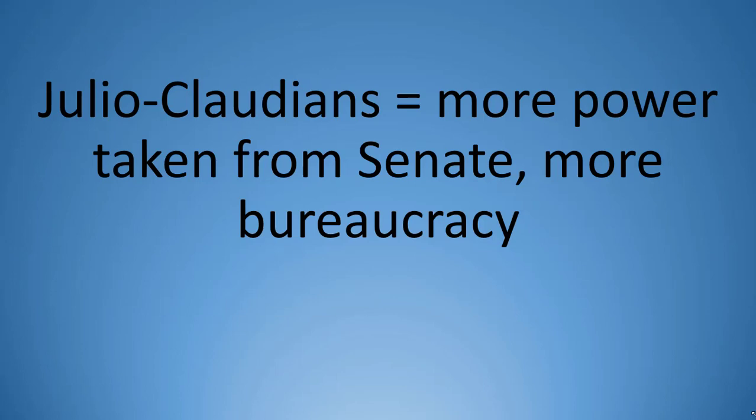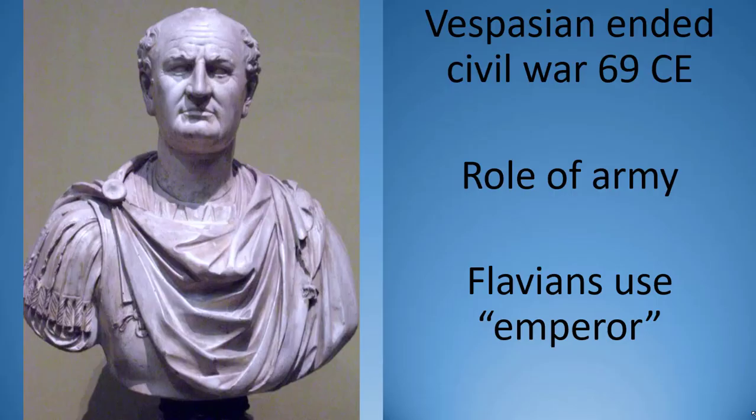The next group of rulers were known as the Flavians, who ruled from 69 to 96 CE. They came to power in 69 with Vespasian, who ended a brief civil war. The Flavians clearly demonstrated an important truth about the empire: the role of the army in creating new emperors. It was the Flavian rulers who shed the facade of republicanism and began using the title of emperor openly.